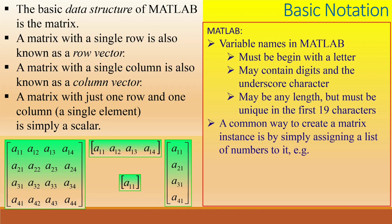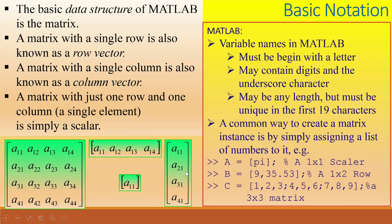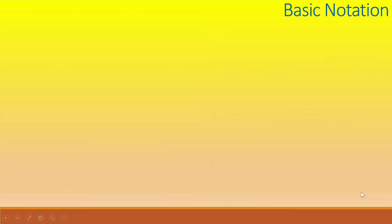A common way to create matrix or array is by simply assigning a list of numbers to it. For example, A is scalar, B is one-by-two row vector and C is a three-by-three matrix. Note that the use of semicolon in the list is used as a row terminator, otherwise as a statement terminator in which case the values assigned to a given variable aren't printed.